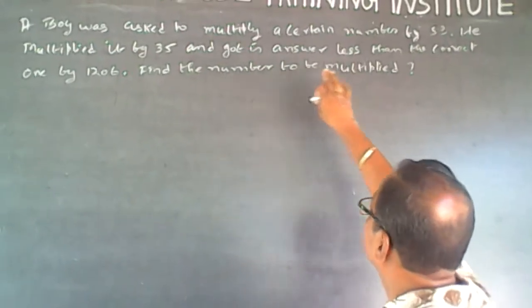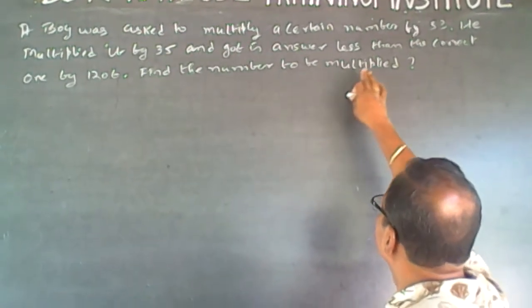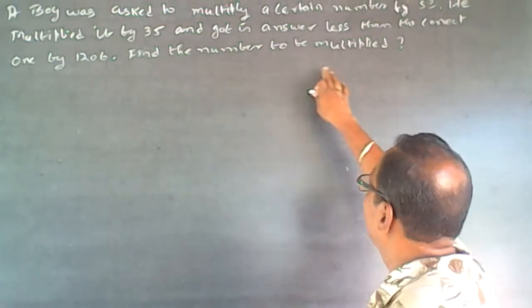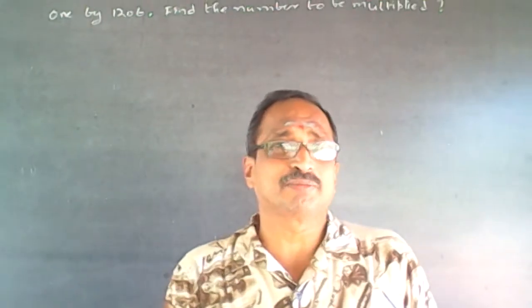A boy was asked to multiply a certain number by 53. He multiplied by 35 and got an answer less than the correct answer by 1206. Find the number to be multiplied. It's a simple question on quantification, on numbers, on rules of numbers.